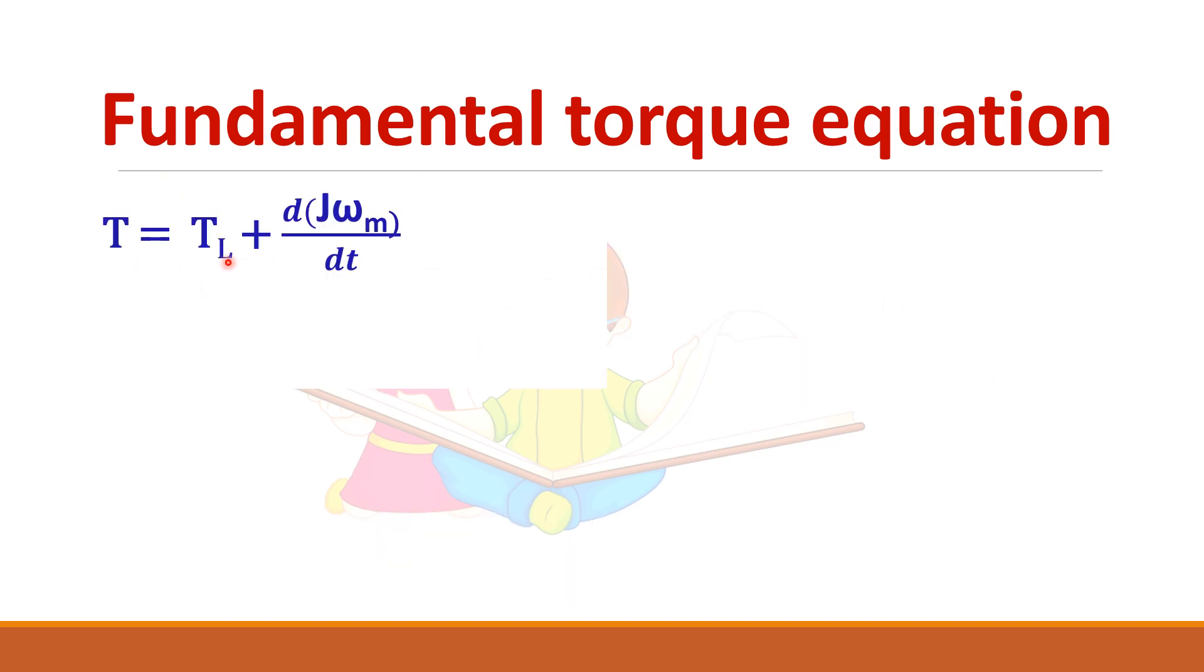So T equals TL plus this component where I can split this into J·dωm/dt plus ωm·dJ/dt. Here in most of the systems the inertia will be constant in most of the drives, so we can make dJ/dt equal to zero because J is constant and differentiation of a constant is zero. So this term becomes zero. So T equals TL plus J·dωm/dt.